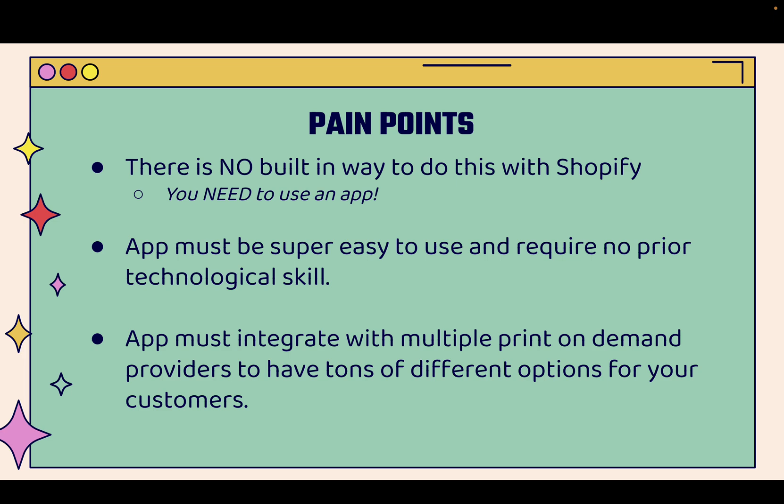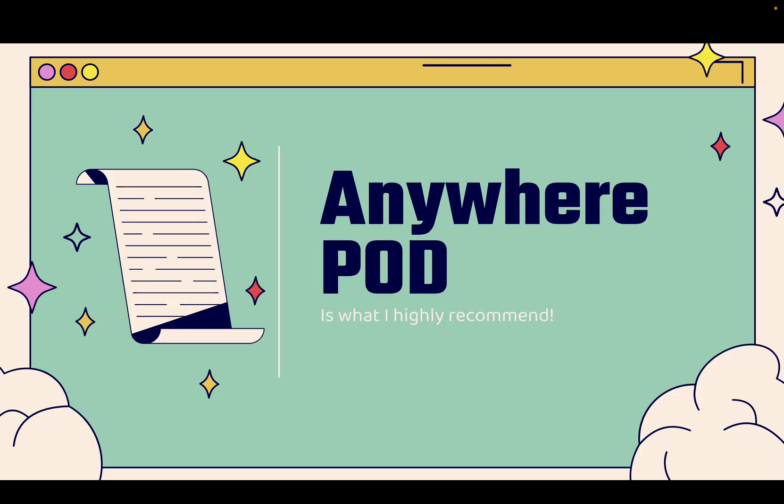Providers like Custom Cat, Shine On, T-Launch, and Printify. The idea is integrating with a lot of different print on demand providers so you have access to their entire library, and all you need is one app — and that app is the Anywhere Print on Demand app. You'll see the link directly below this video. I like to call it the advanced print on demand app.